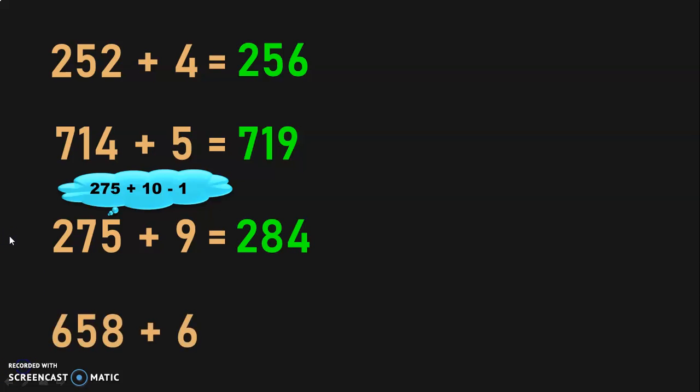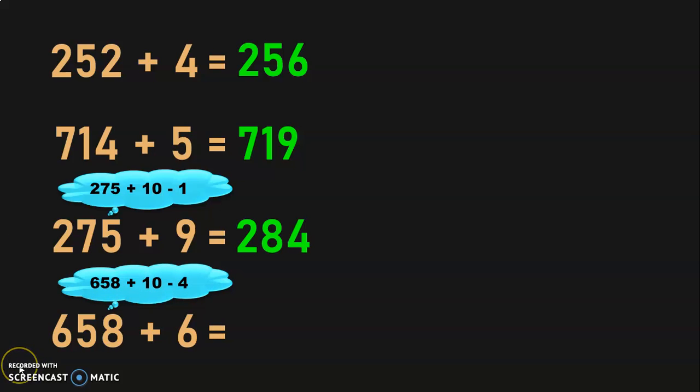Let us do the next sum. 658 plus 6: now we have to add a number which is above 5. So, 658 plus 10 minus 4, which is 668 minus 4, gives you the answer 664.